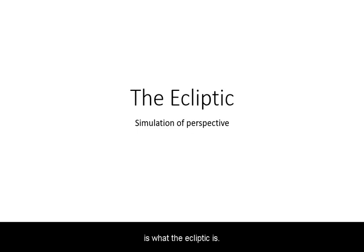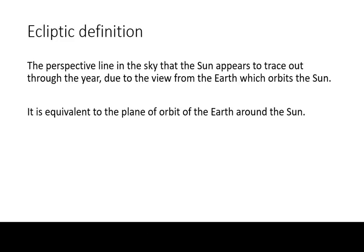This is what the ecliptic is. The ecliptic is the perspective line in the sky that the sun appears to trace out through the year due to the view from the earth which orbits the sun. It is equivalent to the plane of orbit of the earth around the sun.